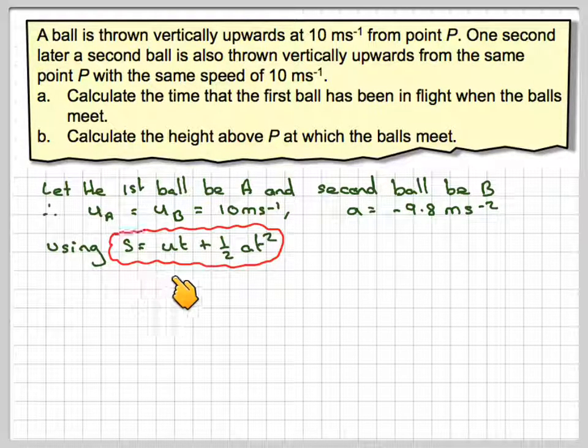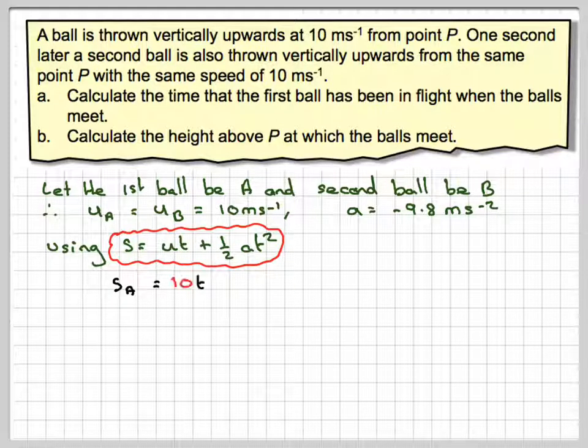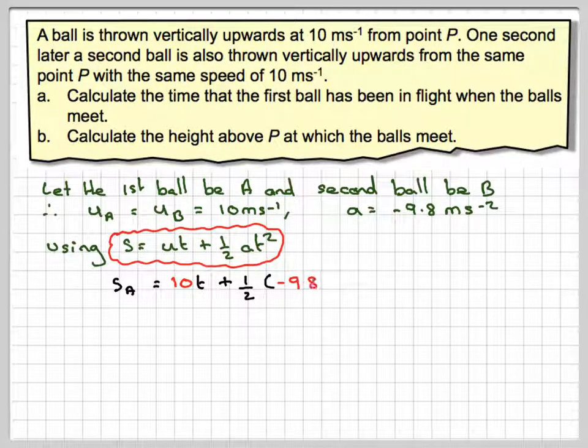Using S equals UT plus half AT squared, then for SA we have 10T plus half times minus 9.8 T squared. We'll call that equation 1.